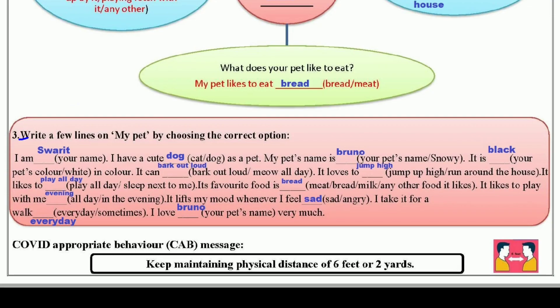Now: Write a few lines on My Pet by choosing the correct option. اب آپ کو My Pet کے اوپر کچھ lines لکھنے ہیں جو کہ یہاں لکھی ہوئی ہیں۔ آپ کو صرف correct option کو choose کرنا ہے، ان lines کو پورا کرنا ہے، اور اس پورے paragraph کو اپنے notebook میں لکھنا ہے اور یاد بھی کرنا ہے، کیونکہ یہ اکثر paper میں بھی آتا ہے۔